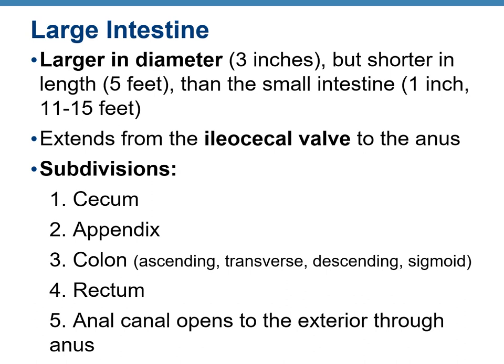This is topic 14b: digestive system, continuing with the second lecture. We covered up to the small intestine in the previous part. In this part we are going to start with the large intestine. The large intestine is called so because it is larger in diameter — about three inches — whereas the small intestine is only one inch in diameter.